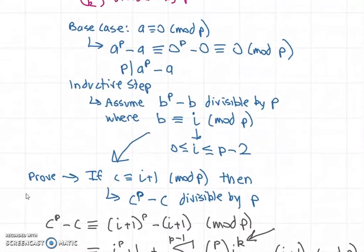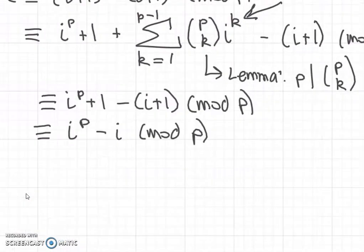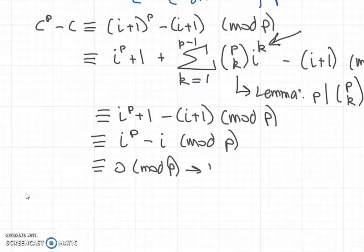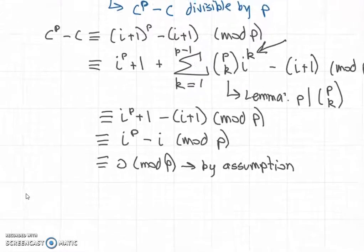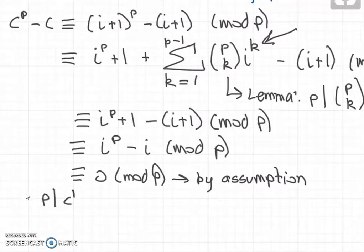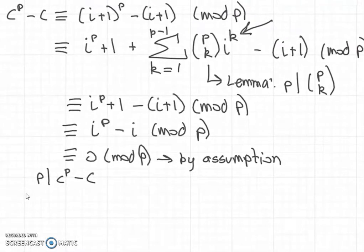Remember, when b is congruent to i mod p, we have b^p minus b is zero mod p, which means i^p minus i is congruent to 0 mod p. This is by assumption—by the inductive hypothesis. This means we've proven that p divides c^p minus c, and the inductive step is complete.